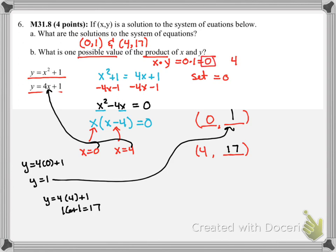The other one would be 4 times 17. I don't know that in my head, but I can do it pretty easily. 4 times 7 is 28, carry the 2. 4 times 1 is 4, plus 2 is 6. So our answers would be 0 or 68.